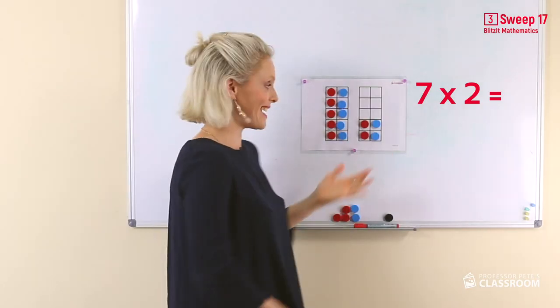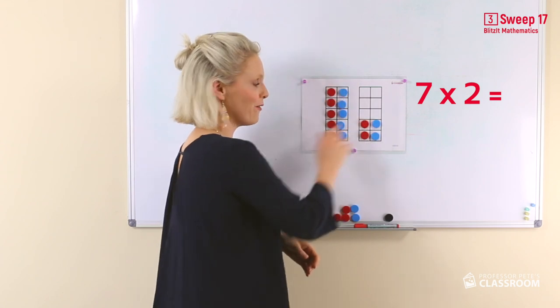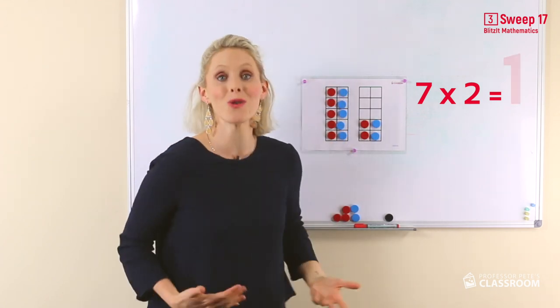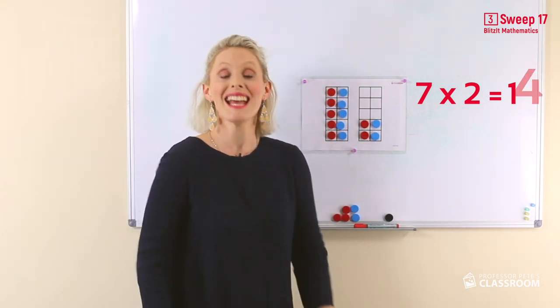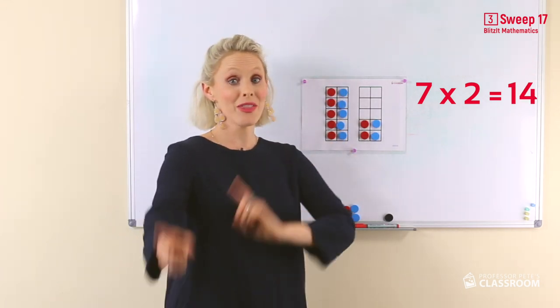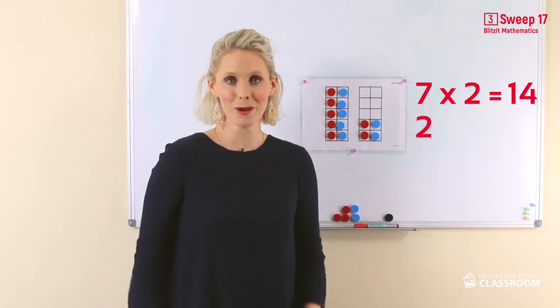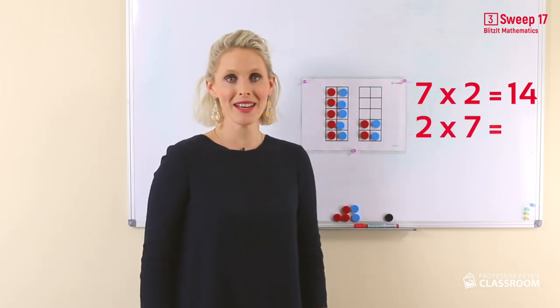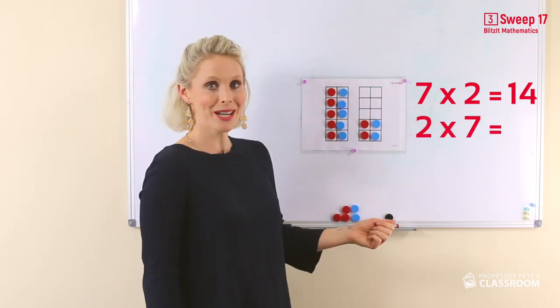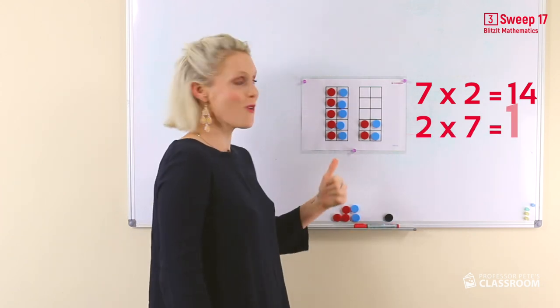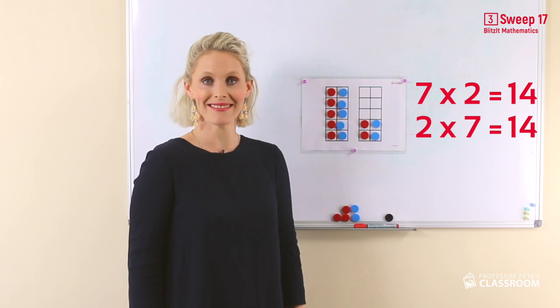You can see it! Ten and four, fourteen. Now, remember the turnaround. Two multiplied by seven has to equal fourteen.